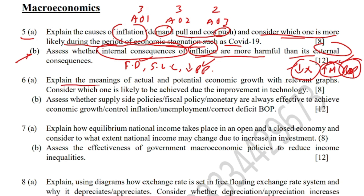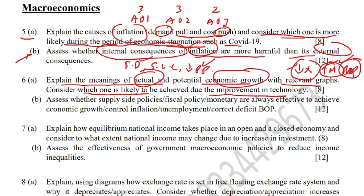Moving to the next question: explain the meaning of actual and potential economic growth with relevant diagrams, and consider which is likely to be achieved due to improvement in technology. First, define economic growth — it is a rise in real GDP due to employment of previously unemployed resources. Potential growth is achieved due to an increase in the quantity or quality of resources.